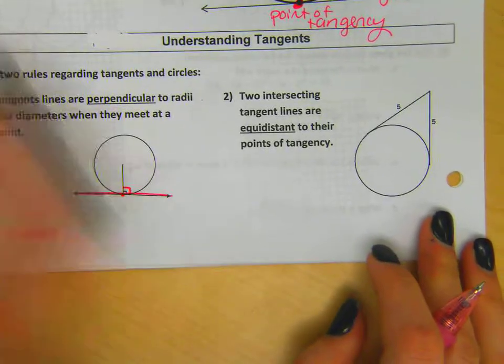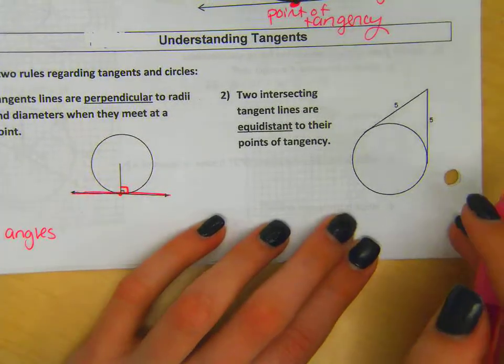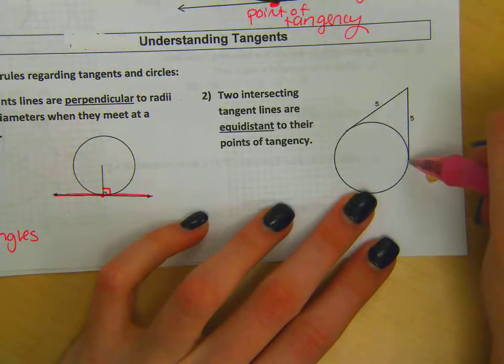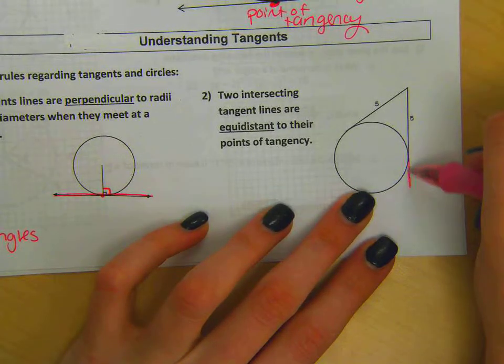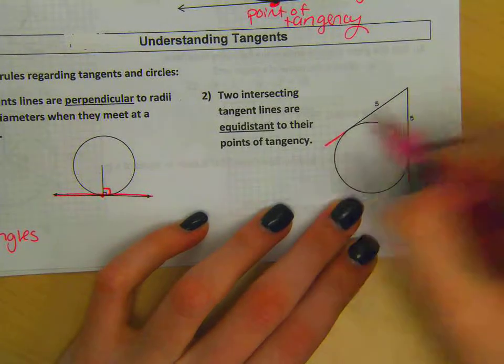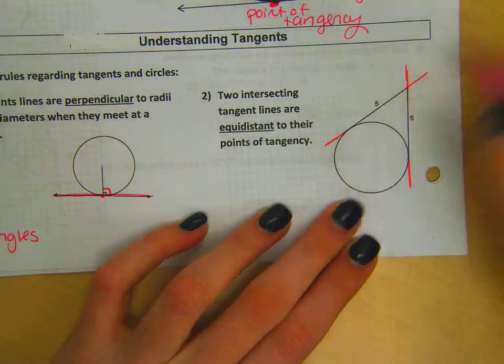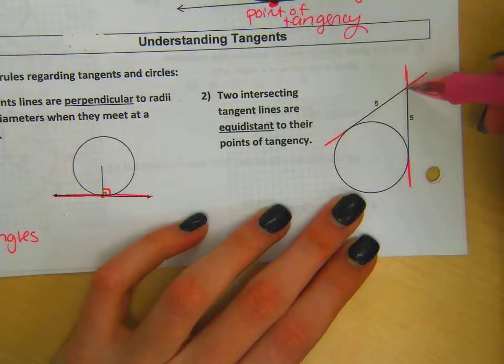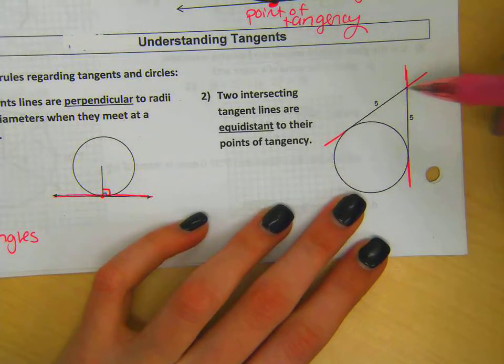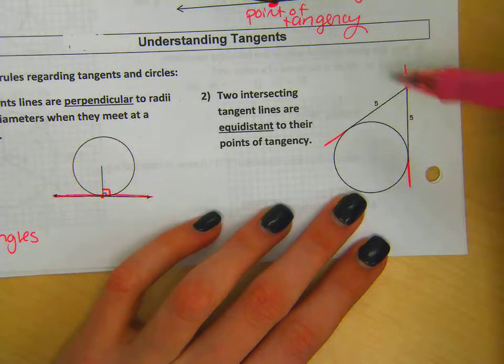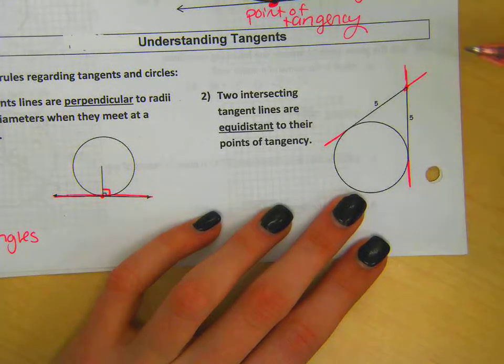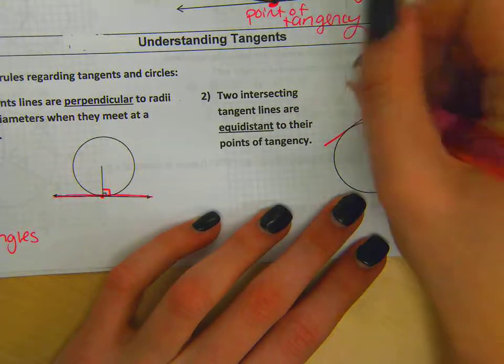The second rule is when I have two intersecting tangent lines. And so in this picture, the tangent lines aren't truly drawn out all the way. If I have two lines here, this is a tangent line, this is a tangent line, they intersect at a point. When this occurs, those points of intersection right here are going to be equidistant, which means equal and distant to the point of tangency.